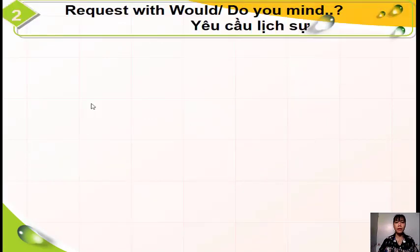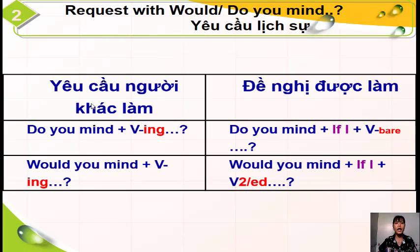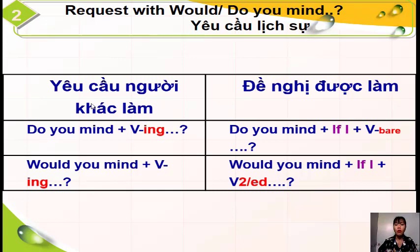Công thức chung: 'Do you mind' và 'Would you mind' có thể sử dụng trong 2 trường hợp. Một là yêu cầu người khác làm gì đó cho mình: dùng 'Do you mind' hoặc 'Would you mind' cộng cho động từ thêm '-ing'. Hai là đề nghị bản thân mình được làm cái gì đó: dùng 'Do you mind if I' cộng cho động từ nguyên mẫu, hoặc 'Would you mind if I' cộng cho động từ ở cột thứ 2 hoặc thêm '-ed'. Đó là toàn bộ cấu trúc của 'Do you mind' và 'Would you mind'.